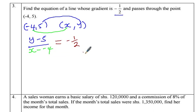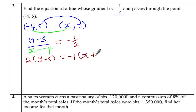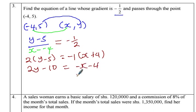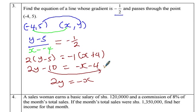From here we do cross multiplication: 2(y − 5) equals −1(x + 4). Opening brackets: 2y − 10 equals −x − 4. Collecting like terms: 2y equals −x − 4 + 10, which gives 2y equals −x + 6. That is the equation of the line.